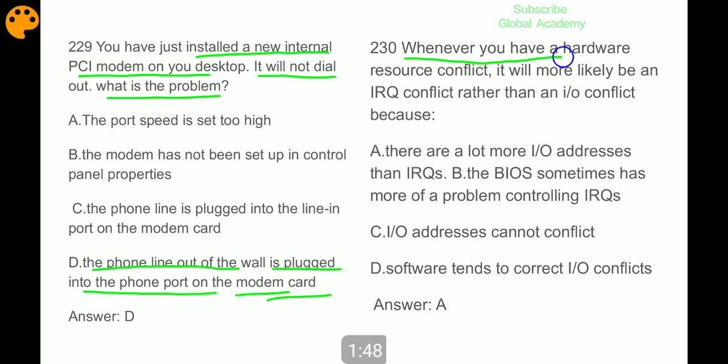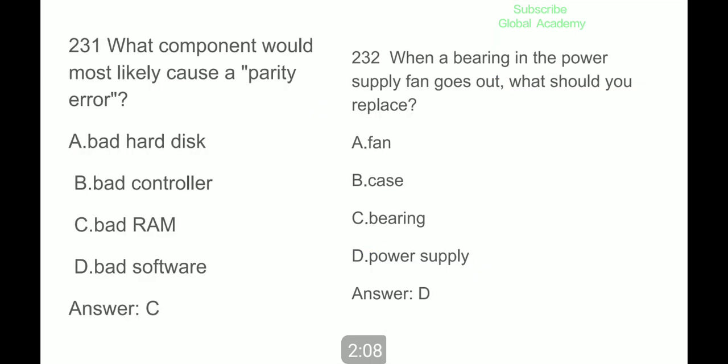Whenever you have a hardware resource conflict, it will more likely be an IRQ conflict rather than an IO conflict because there are a lot more IO addresses than IRQs. What component would most likely cause a parity error? Bad RAM. When a bearing in the power supply fan goes out, what should you replace? Power supply.